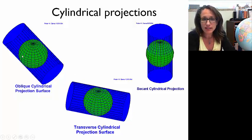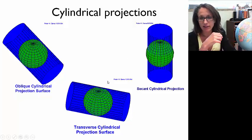Cylindrical projections can be tangent to the globe along a meridian or you could turn it so that it's along a parallel.